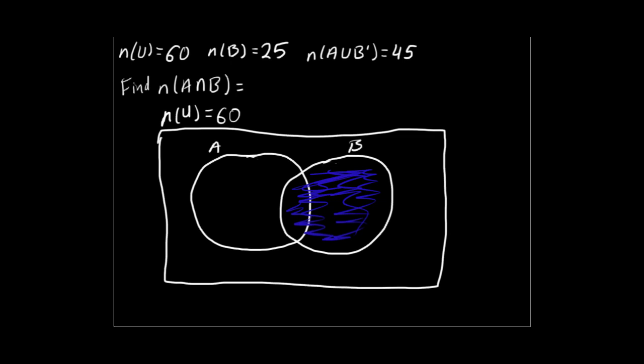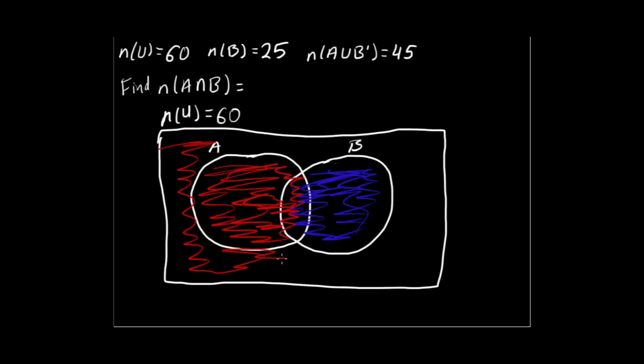We also are given A union B complement, which is best read as A plus everything not in B. Everything in A plus everything not in B. So here's everything in A. And then we also have everything not in B. There's going to be all this area right here.